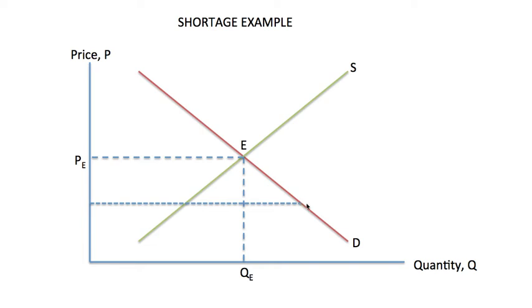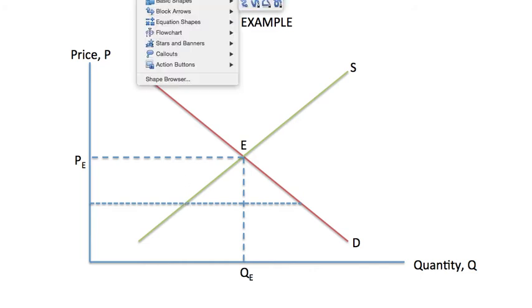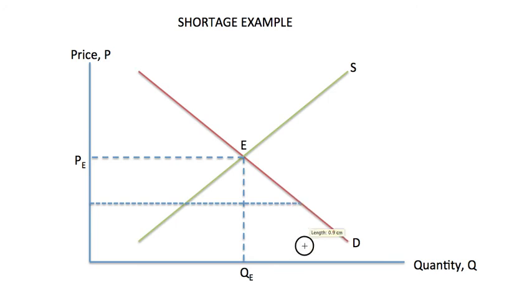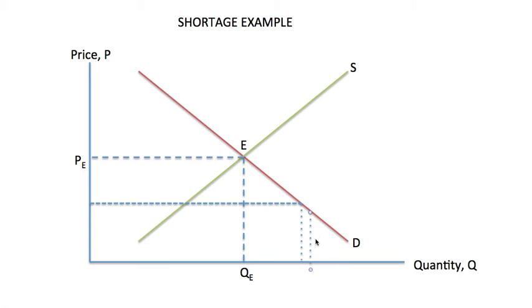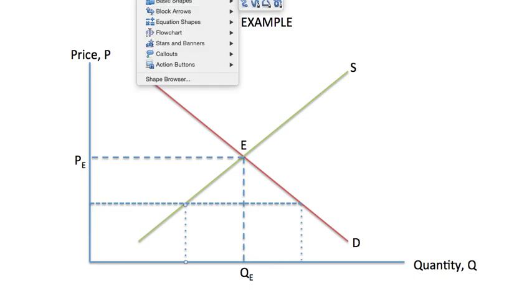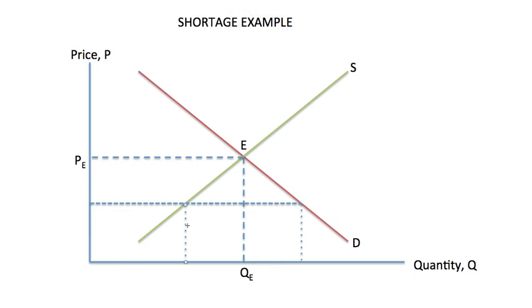So there's more people that want goods that are not as available. So here I just plot the quantities. Here we go. So the shortage is actually the difference between those two quantities, so that is our shortage here.